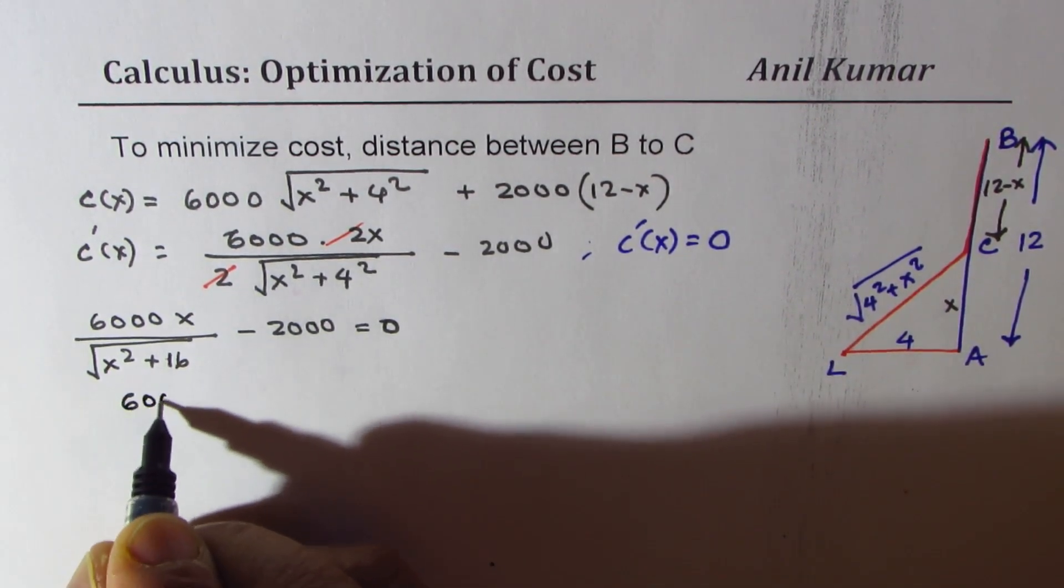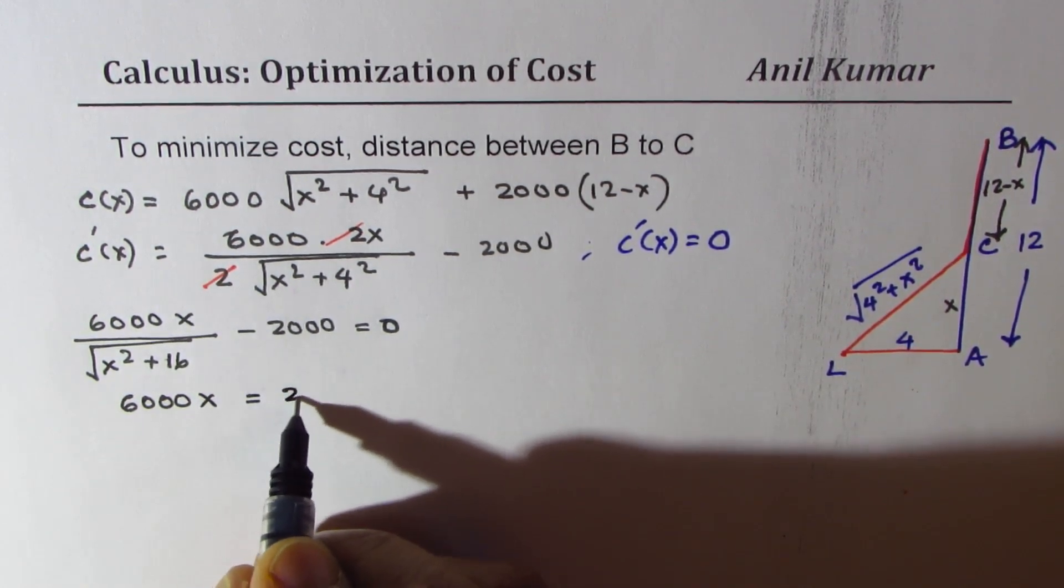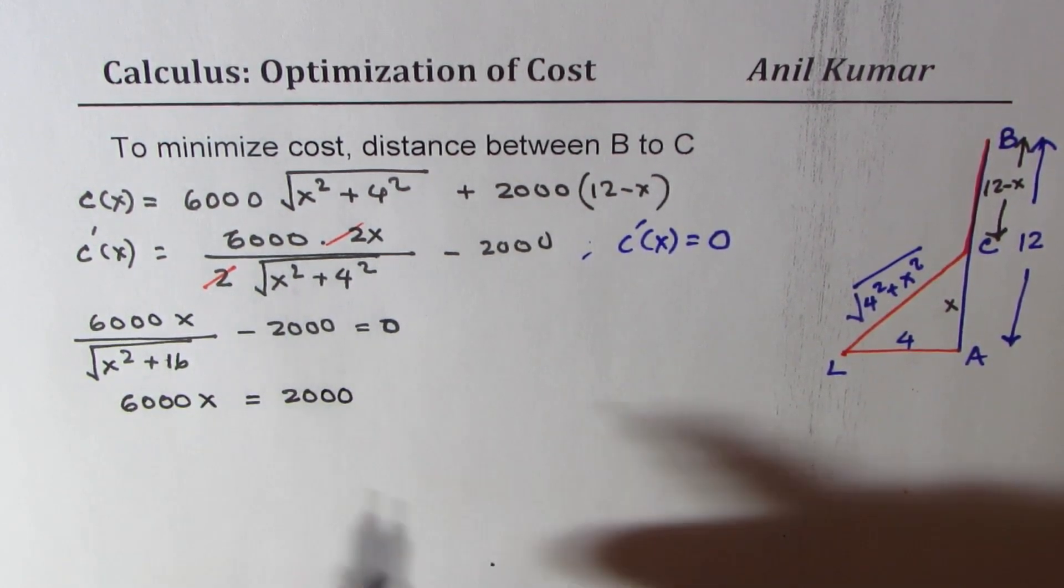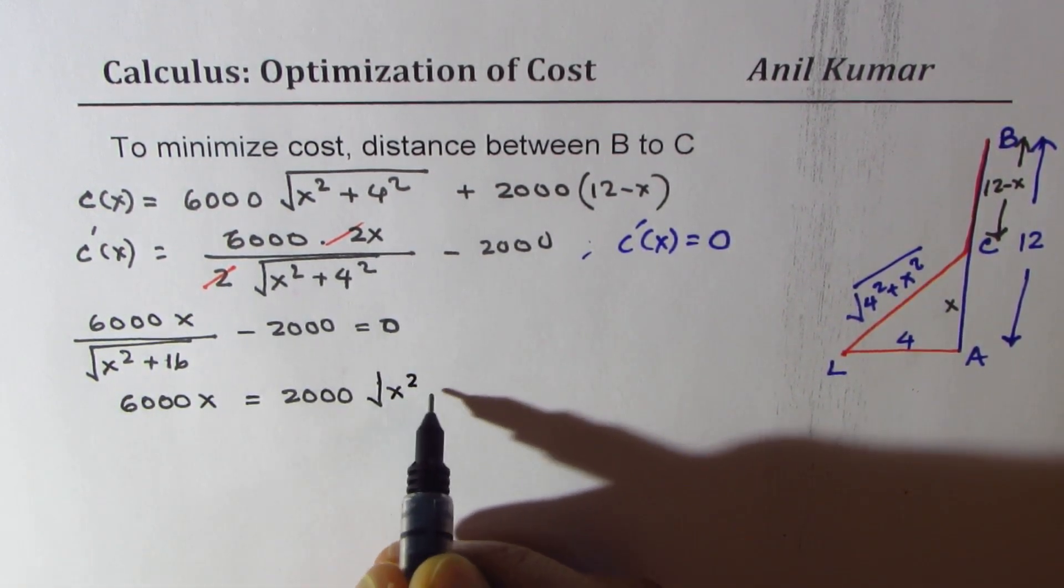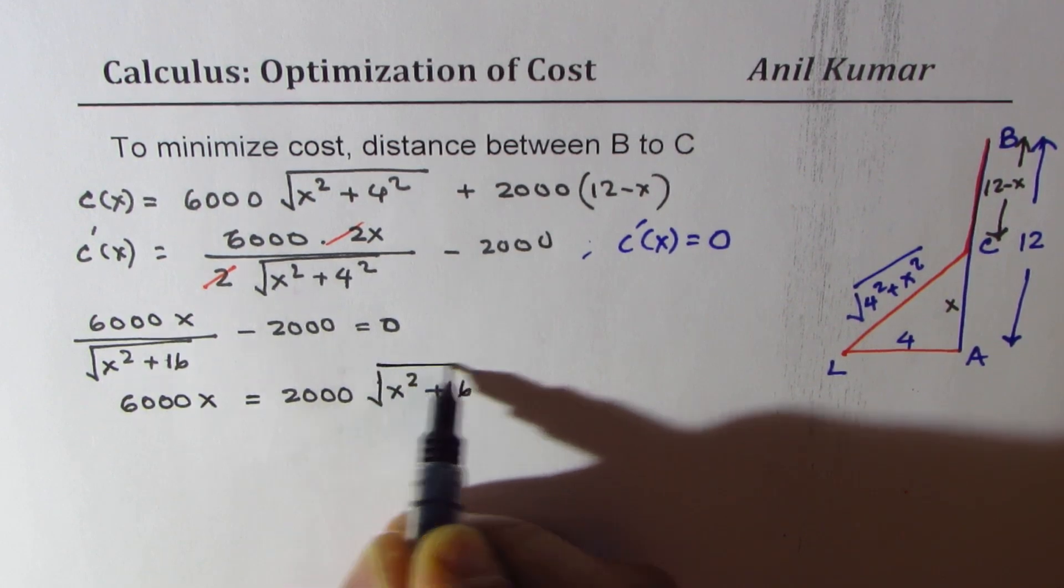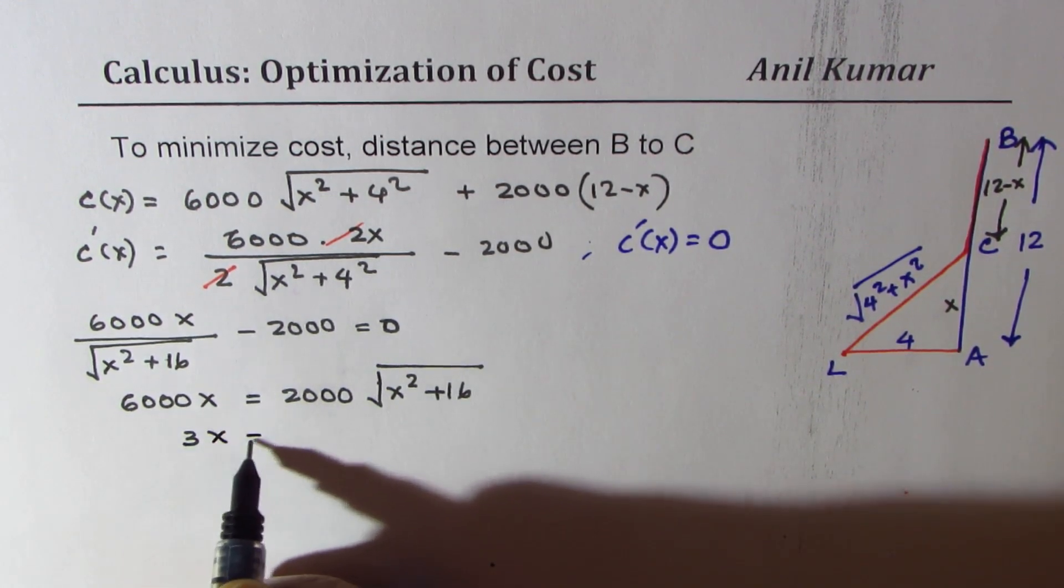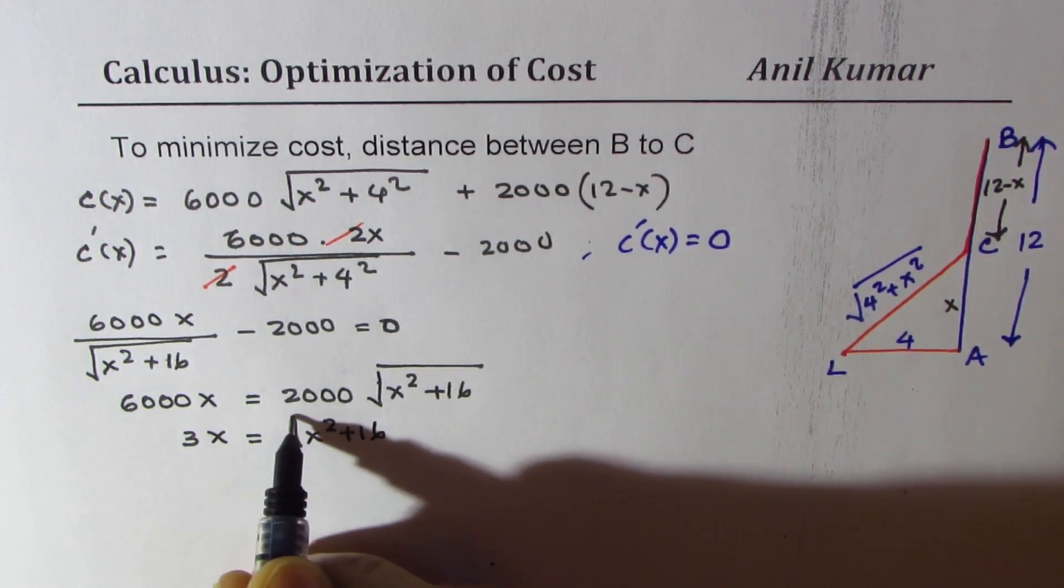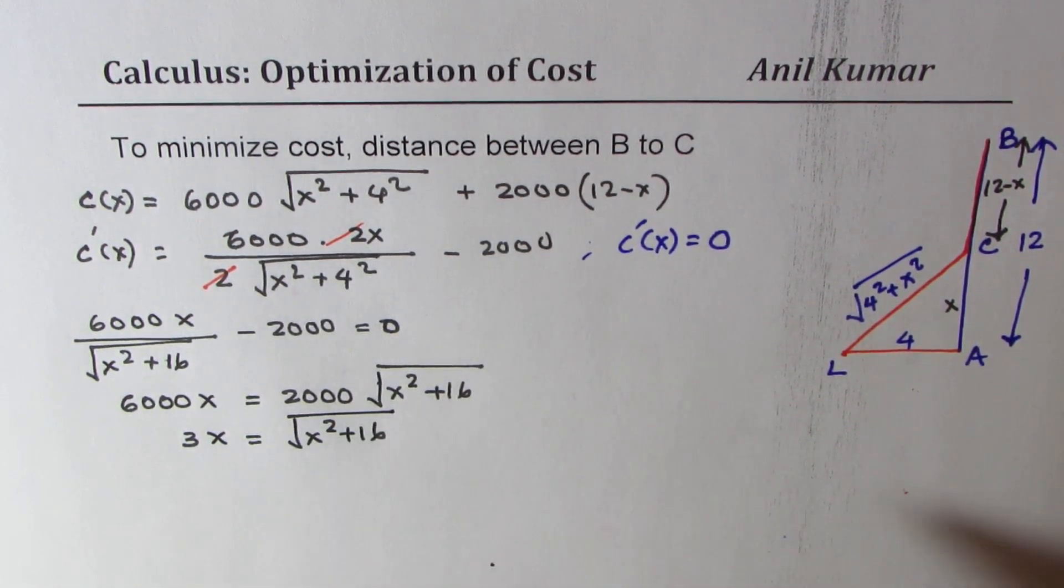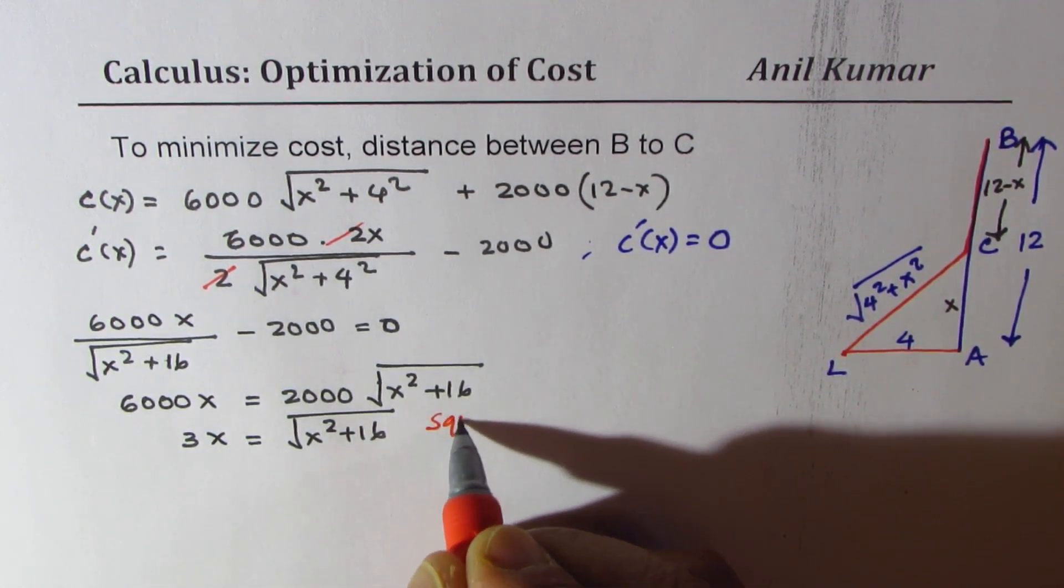we get 6,000x equals to 2,000, and we'll cross multiply with x square plus 16. We can divide by 2,000, so we get 3x equals to square root of x square plus 16, and now we can square both sides. So at this stage, let us square both sides.